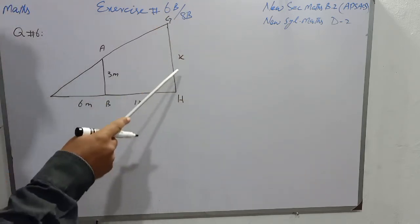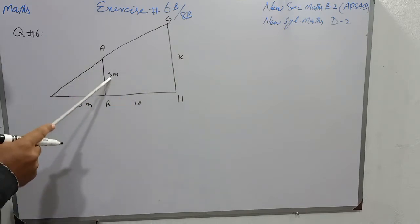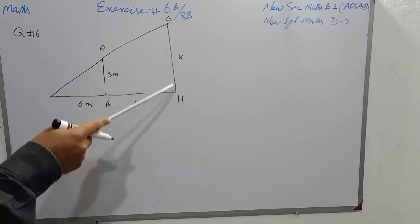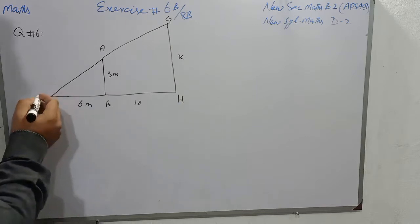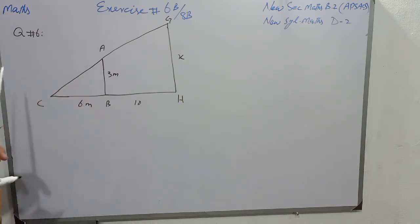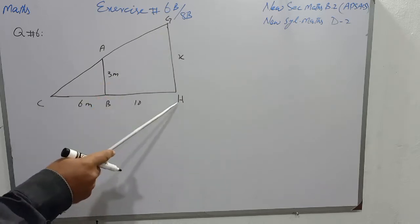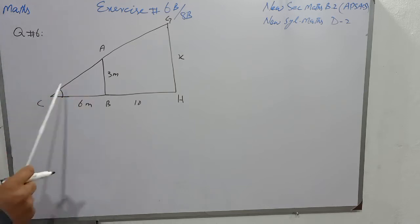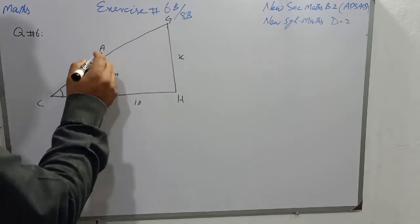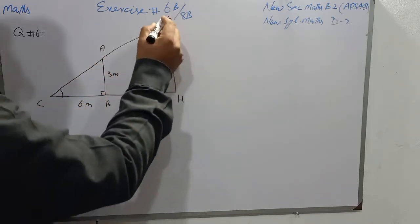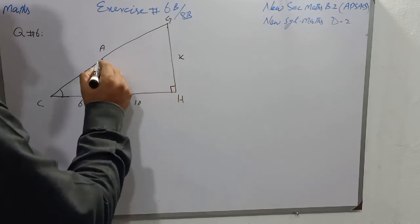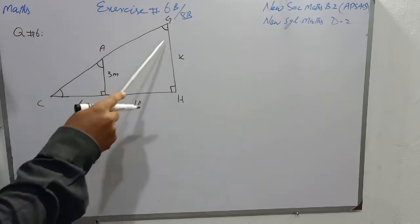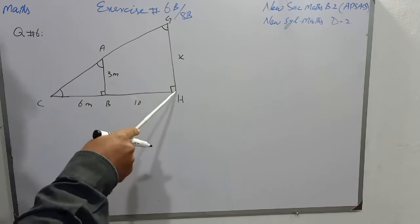GH is the height of the lamp. AB is the pole whose shadow is 6 meters, and the pole is 10 meters away from the standing lamp. I name this point as C. There are two triangles, ABC and GHC, and both triangles are similar as angle C is common between both triangles. Angle ABC and angle G are right angles, and angles A and G are corresponding angles since the pole and lamp are perpendicular to the ground.